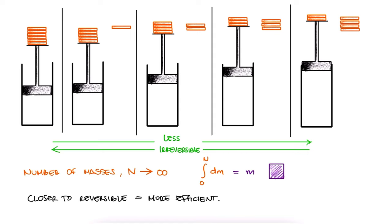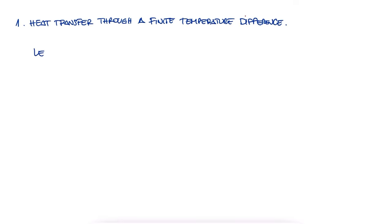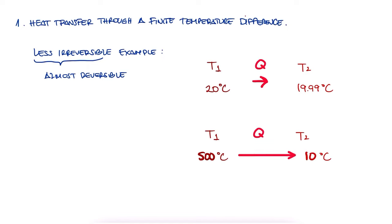A parallel example in terms of heat transfer would be to have heat go from one barely slightly higher temperature to a barely slightly lower temperature. It's still not reversible, but it somewhat makes sense to say that it would be much easier to reverse the heat transferred from a body at 20 degrees Celsius to the surroundings at 19.99 degrees Celsius than the heat transferred from 500 degrees Celsius to 10 degrees Celsius.